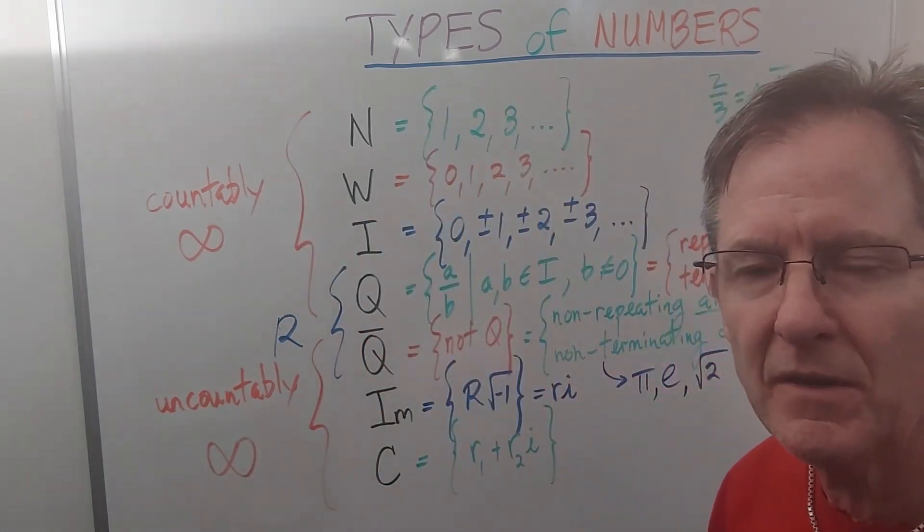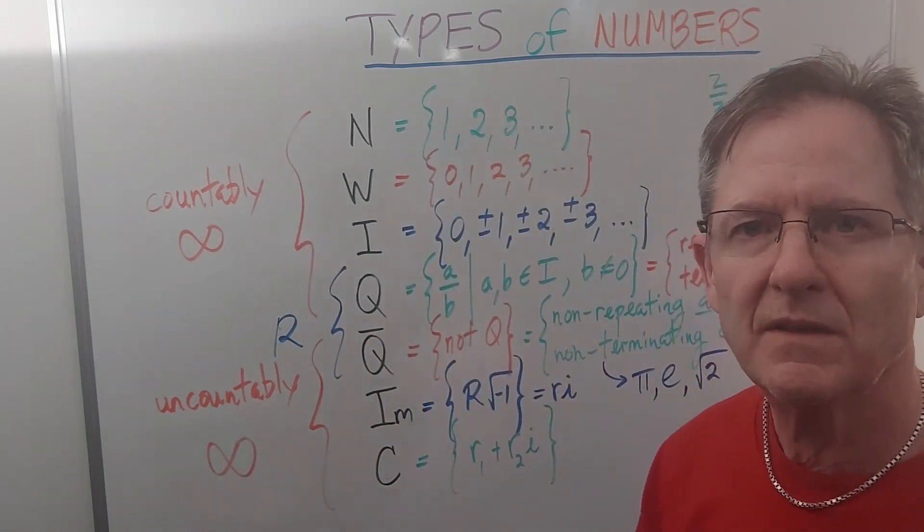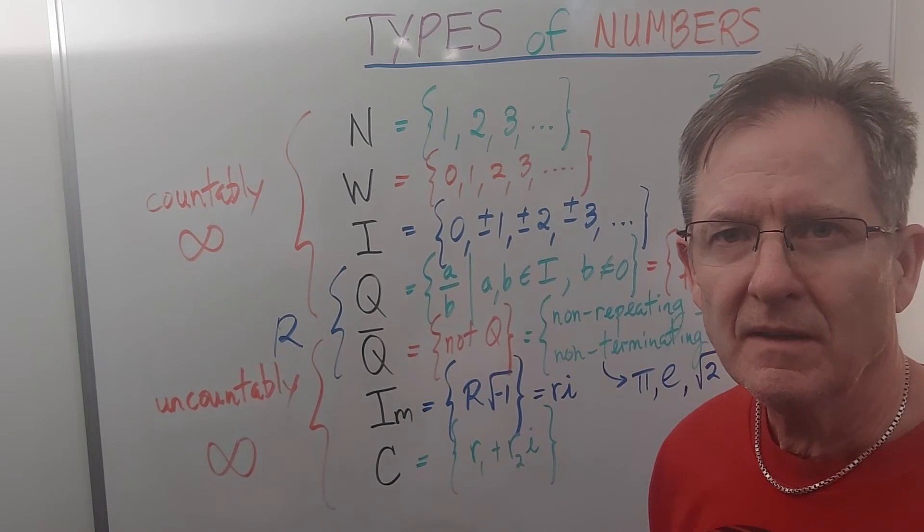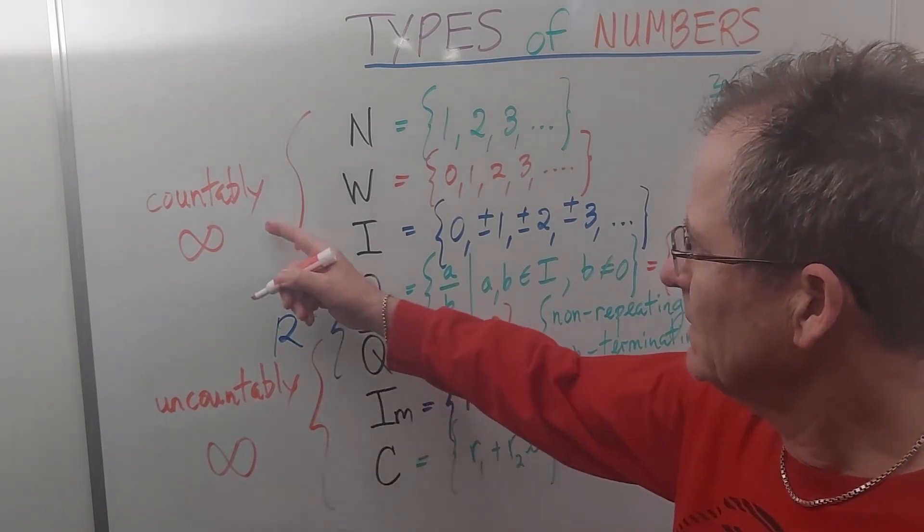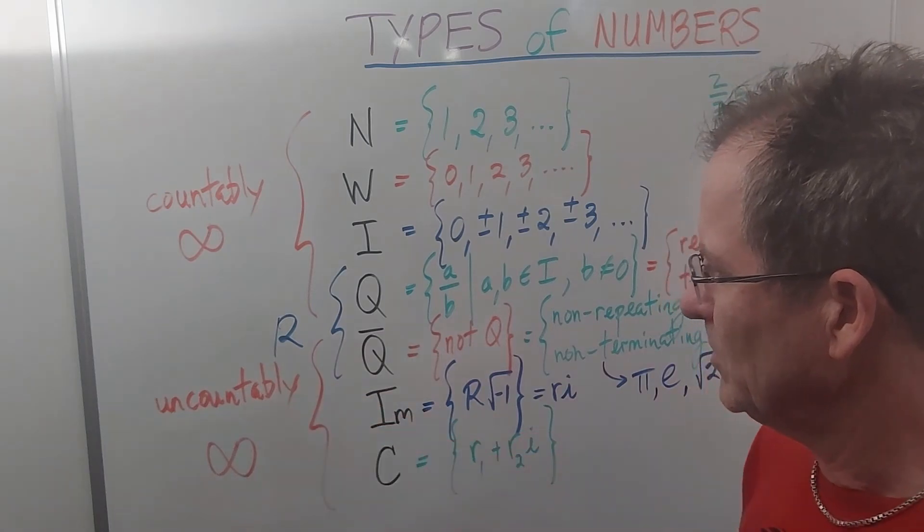So what does that mean? Well, believe it or not, something can be more infinite than something else. There are different types of infinities, basically countable ones and uncountable ones.